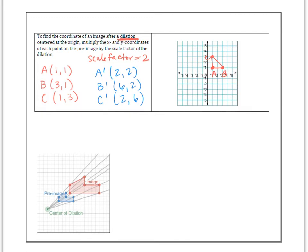So I'm going to plot a point at (2,2) and label that A prime. (6,2), here's B prime. And (2,6), here's C prime. And then connect them.